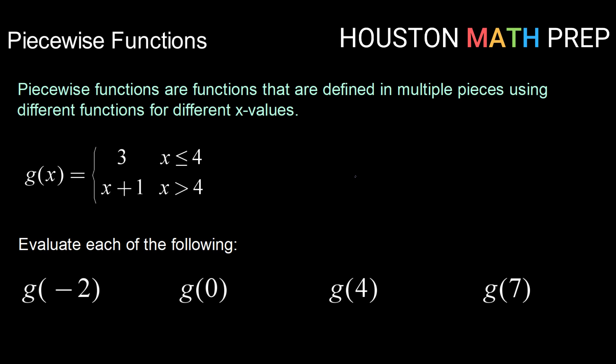Now here in this example I've got a piecewise function that only has two pieces. So if I think about my number line from negative infinity to infinity, this one is broken into two pieces splitting at four. So for four and below we are using the expression g of x equals three.